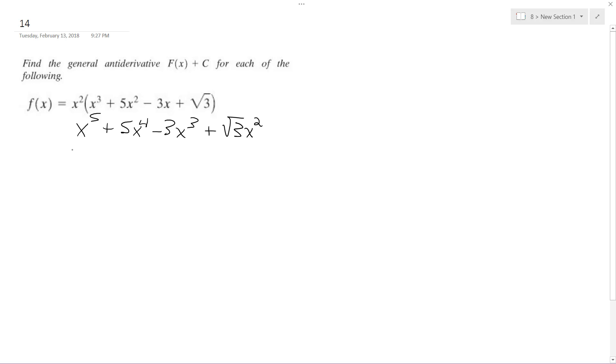All right, so here we go. F of x is equal to the integral of x to the fifth plus 5x to the fourth minus 3x to the third plus square root of 3x squared dx.